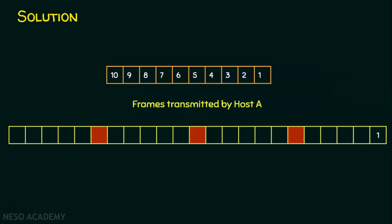Let's walk through the transmission. Frame 1, 2, 3, 4, 5, and frame 6 are transmitted. Even if frame 6 is lost, the sender continues sending frames 7, 8, and even 9. Eventually, the sender waits for the acknowledgement for frame 6. Since the receiver won't send an ACK for frame 6, after a timeout the sender retransmits frame 6 only, then continues with frames 9 and 10. Frame 6 alone is retransmitted — not the entire window, as would happen in Go Back N ARQ.